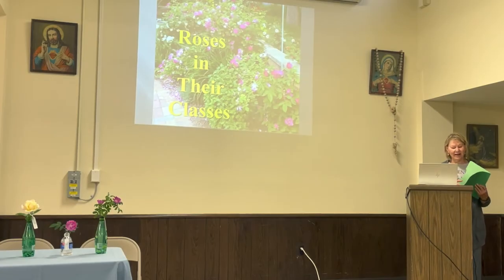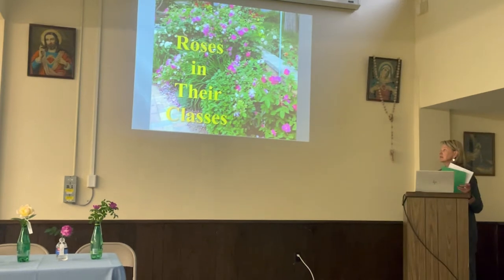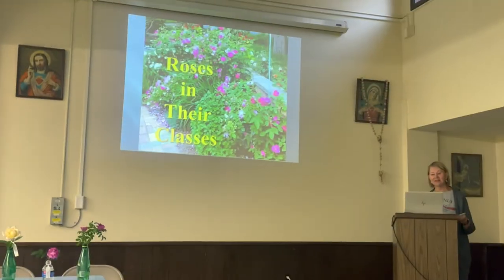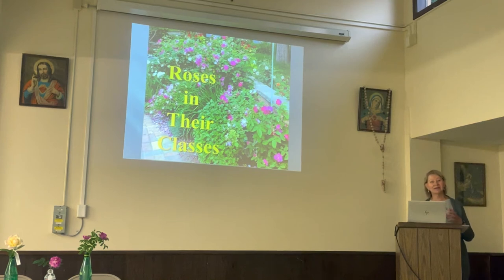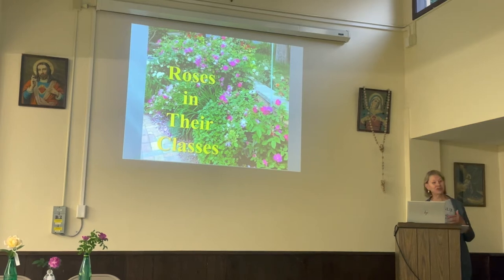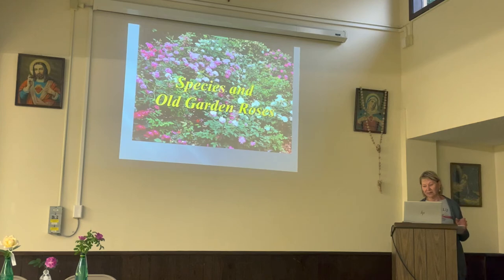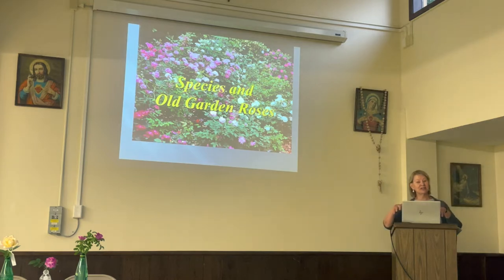The American Rose Society has divided up roses into various classes. The whole idea is to separate them into groupings that describe their characteristics. Most of these pictures are taken in my yard. The main groupings — the larger separation — are the species, the old garden roses, and then the modern roses. We'll start with the old garden roses.